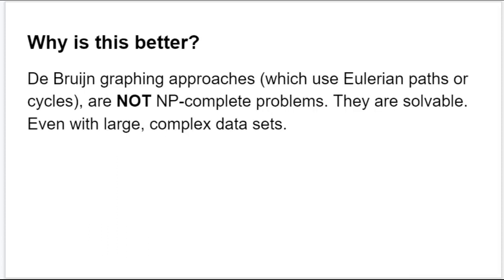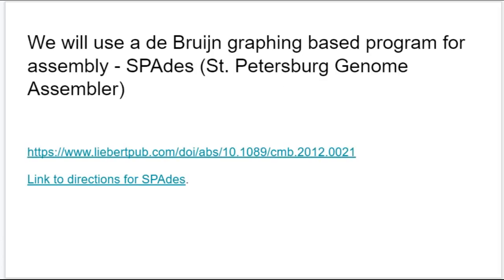Euler figured that out. So why is this better? De Bruijn graphing approaches, which use Eulerian paths or cycles, are not NP-complete problems — they are solvable even with large, complex datasets. This was published in 2001 by Pevzner and colleagues, and since then de Bruijn graphing approaches have been built into the majority of genome assemblers, especially popular ones like the one we will use in class, called SPADES — the St. Petersburg Genome Assembler. You'll be running SPADES on your datasets, and the directions are in this slideshow and the README file. That concludes this introduction to genome assembly, and I look forward to seeing you in class.